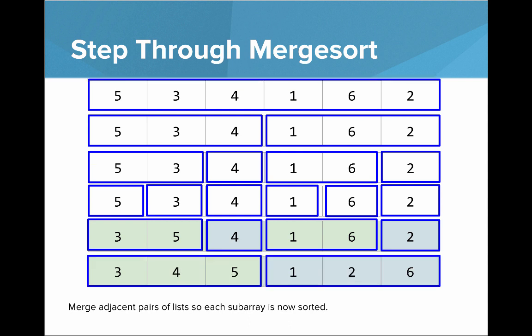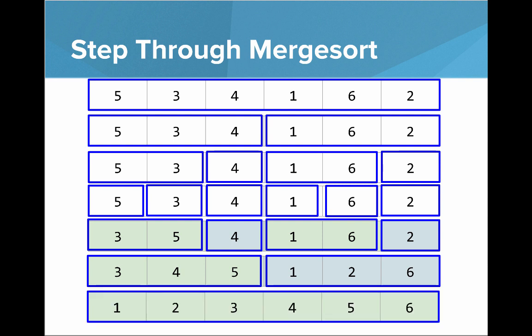Now we merge adjacent pairs of lists again so each sub-array is now sorted. We've merged the 3, 4, 5 list, and we've merged the 1, 2, 6 list — each of those sub-arrays is sorted. Then in the final step we merge those two sorted sub-arrays, so we have 1, 2, 3, 4, 5, 6.